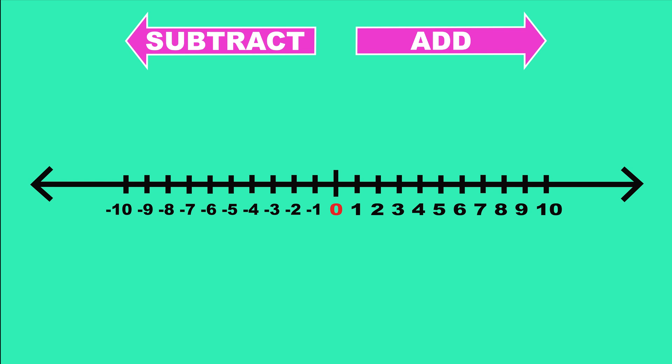Let's say I owe $4 to one friend and I owe $5 to another friend. How much do I owe altogether? Start at negative 4 and go to the left 5 places. The answer is negative 9 — altogether I owe $9.